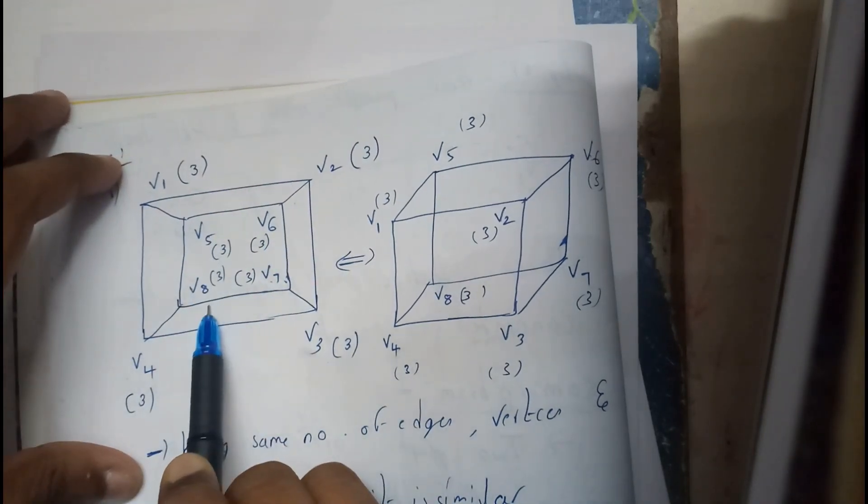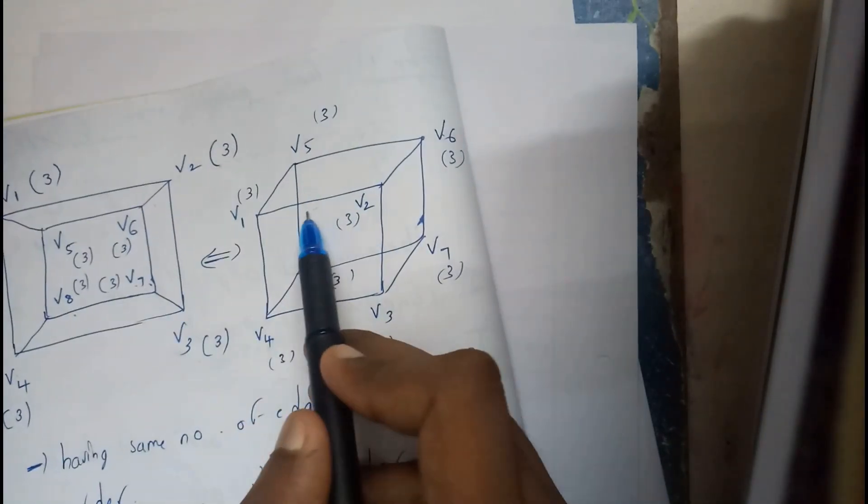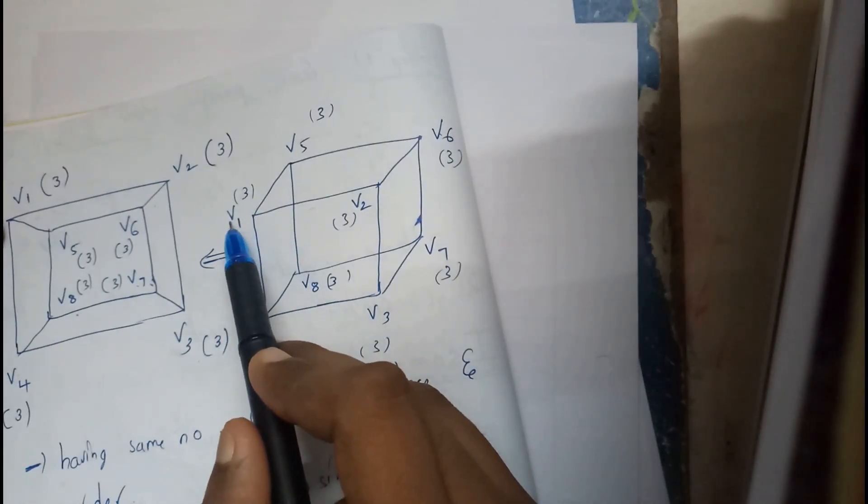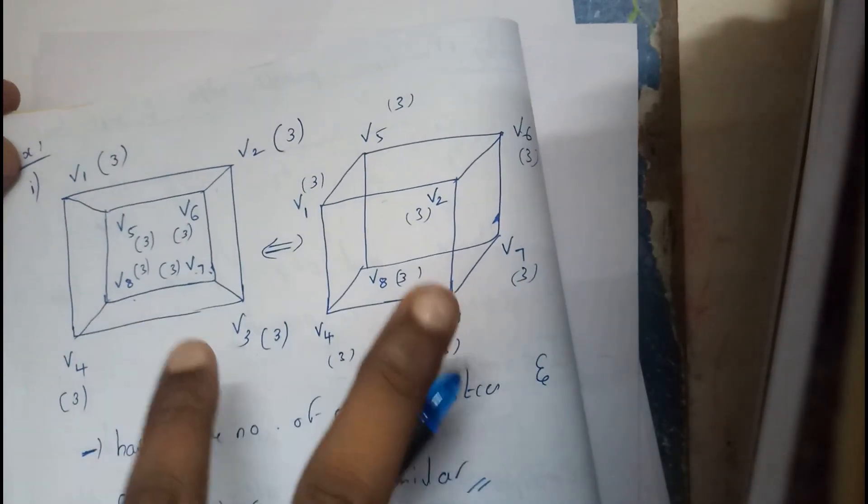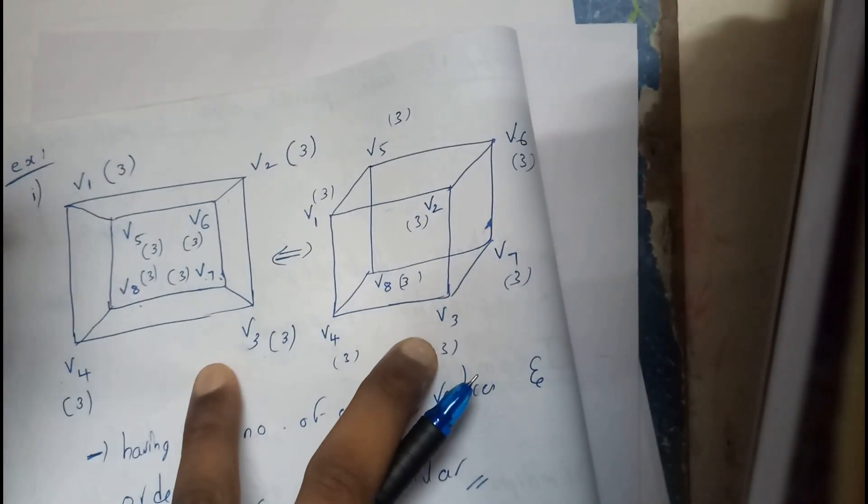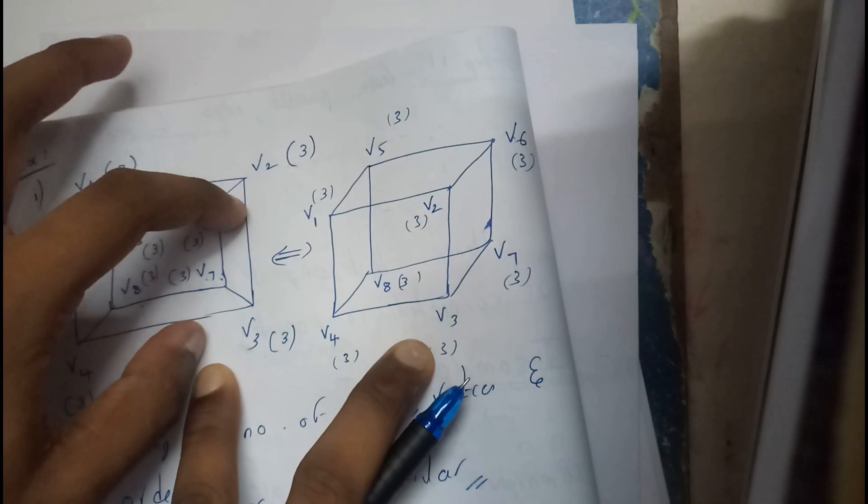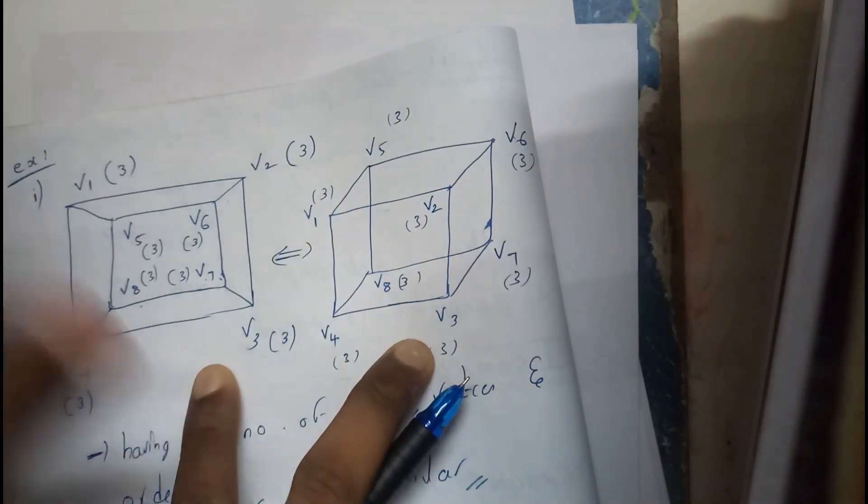Even here also we are having for v1, v2, v3 all are similar. Whenever you want to, okay for the first case all the vertices are same, all the degrees are same. So now let's come to edges.